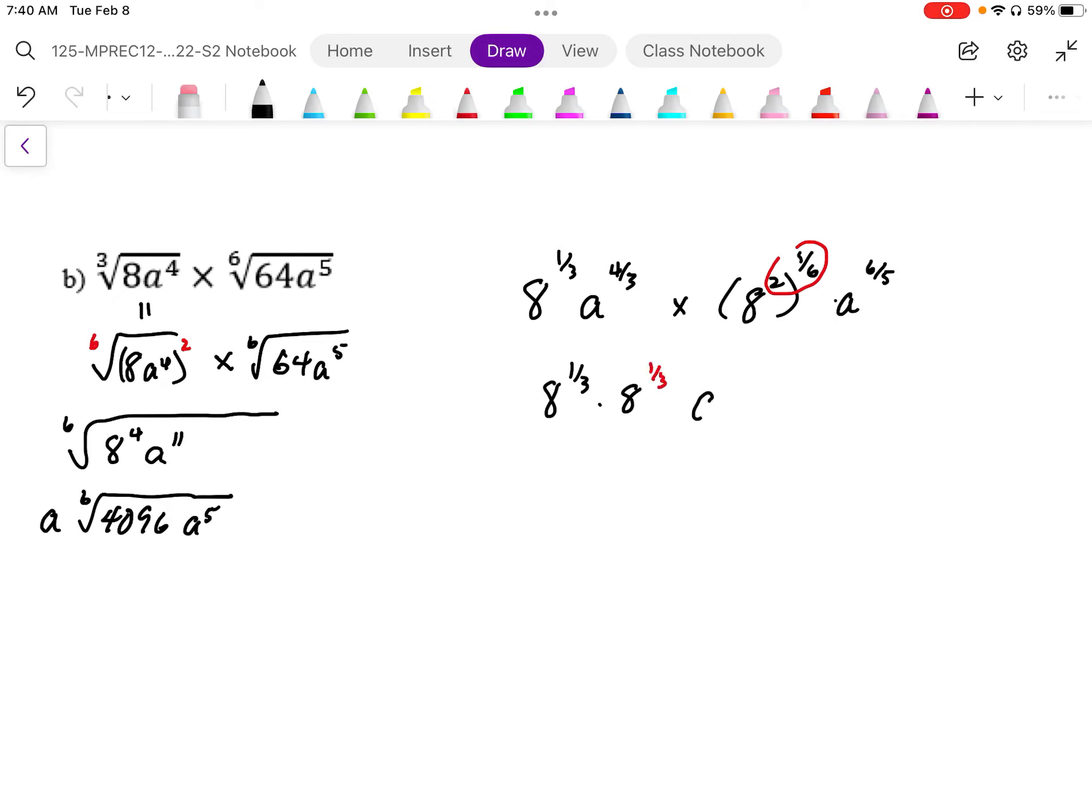And if I'm going to multiply these a's together, I have to get a common denominator. So I end up with 4 thirds plus 6 over 5.